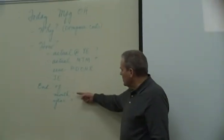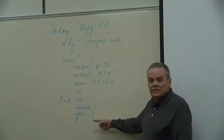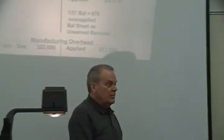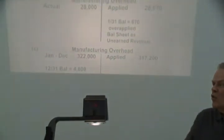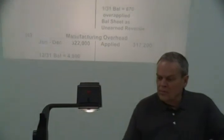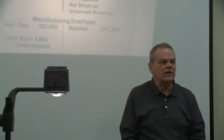The date is December 31st. At the end of the year, time's up — we can no longer allocate those costs in the future. Find the balance: $322,000 minus $317,200 equals $4,800 debit. A debit balance in manufacturing overhead is underapplied.